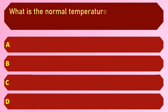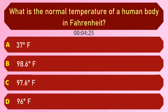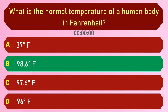What is the normal temperature of a human body in Fahrenheit? Options are: A) 37 degrees, B) 98.6 degrees, C) 97.6 degrees, and D) 96 degrees. The answer is option B, 98.6 degrees Fahrenheit.